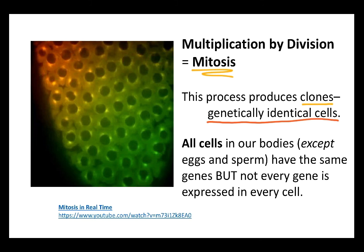All of the cells in your body — in any organism's body — contain the same full library of genetic material. Those genes aren't all turned on; they're not all what we call expressed, but they are all present. The only exception to that, which we'll talk about near the end of the course when we discuss the reproductive system, are the cells referred to as gametes — and those are eggs and sperm.